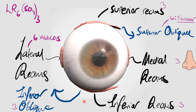This brings us to our first pathology: ocular motor nerve palsy - or third nerve palsy. Palsy basically means your nerve is knocked out, so it isn't working as well as it should. So imagine your third nerve is KO'd. Your superior rectus isn't going to be pulling your eyeball upwards, so your eyeball is going to start drifting downwards from your normal gaze position.